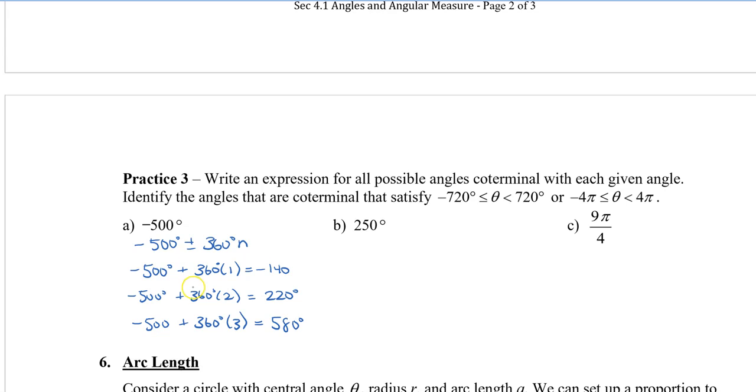Now I can also subtract, but you'll notice that if I go negative 500 minus 360 degrees times 1, I'm going to get negative 860. And that's already too big or very negative and it's too small to fit into this range. So we actually don't need this one.